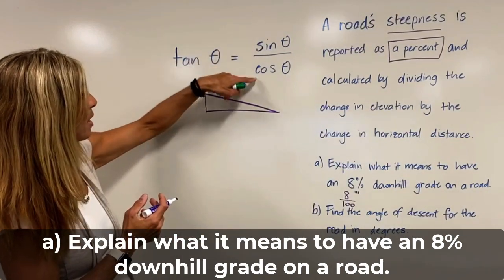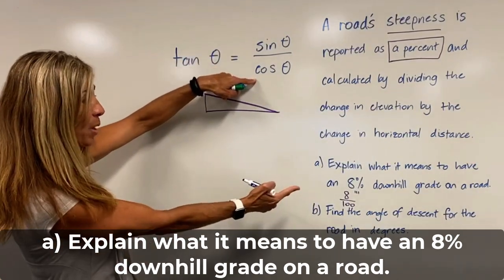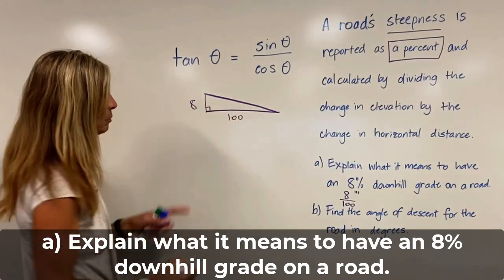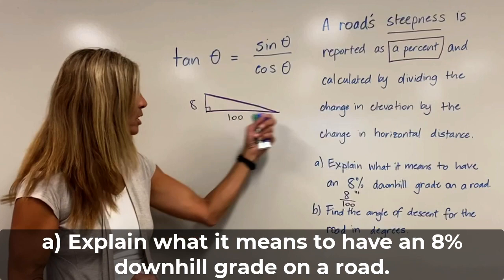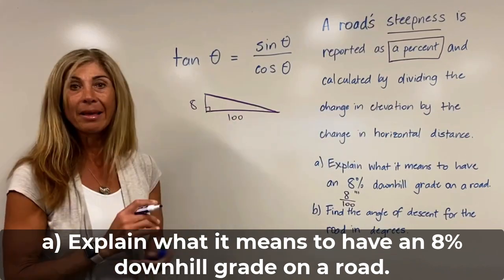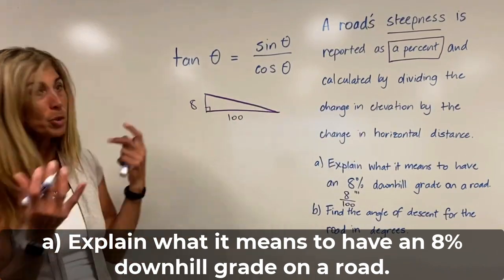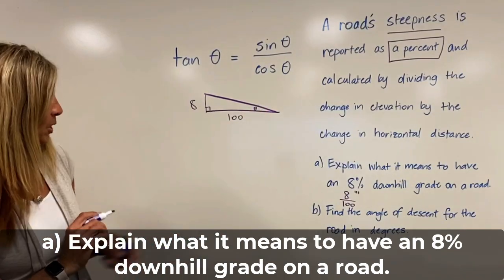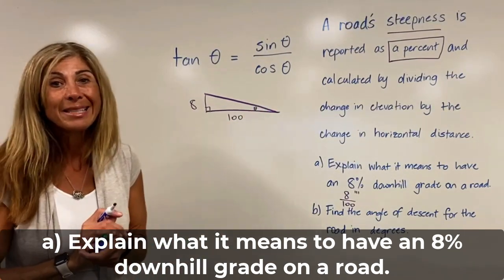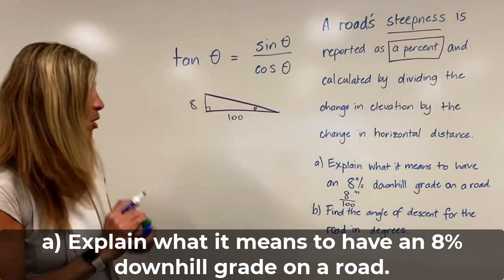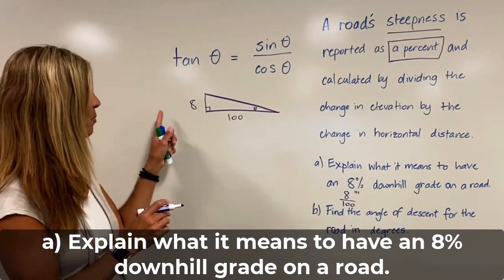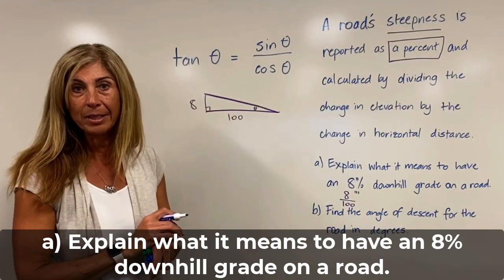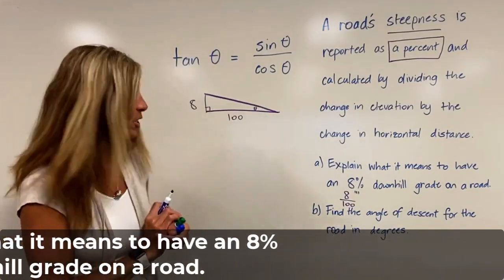Sine theta divided by cosine theta equivalent to eight over 100. So we have our eight being our rise and our 100 being the length of that road. Which means where's our angle? Right here. So an eight percent downhill grade. What does that interpret as? It means for every 100 feet we run, we go down eight feet. That would be the interpretation.